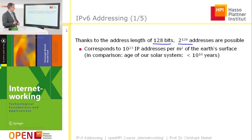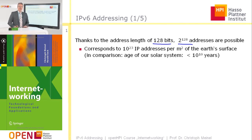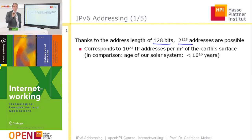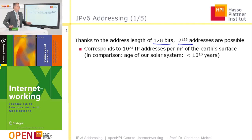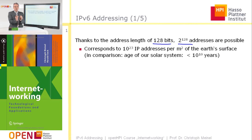To get a feeling for what this size means, here is one comparison. 2 to the 128 different addresses corresponds to 10 to the 23 IP addresses per square meter of Earth's surface. That means 1 followed by 23 zeros different IPv6 addresses are available for just 1 square meter of Earth's surface.